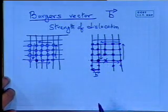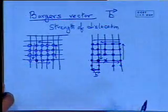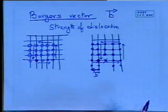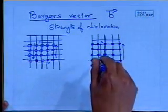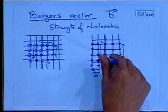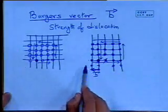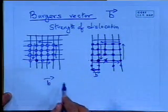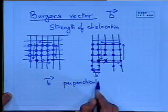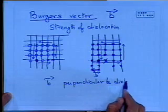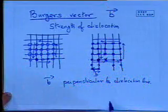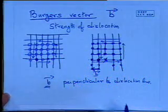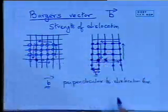If we know the Burgers vector for the dislocation, we can identify various properties of it — it tells us about the strength. Remember, the dislocation line itself is perpendicular, going into the plane of the paper. And the Burgers vector is perpendicular to the dislocation line. So in the case of an edge dislocation, the Burgers vector lies perpendicular to the dislocation line.